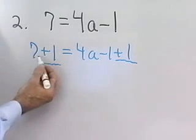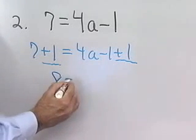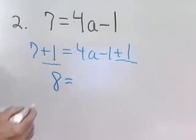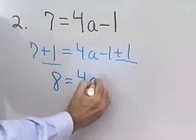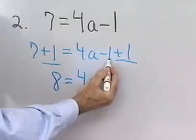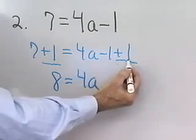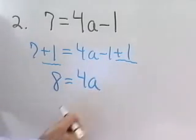On the left side, 7 plus 1 is 8, and on the right side I have 4a plus negative 1 plus 1, which is 4a plus 0, which is just 4a.